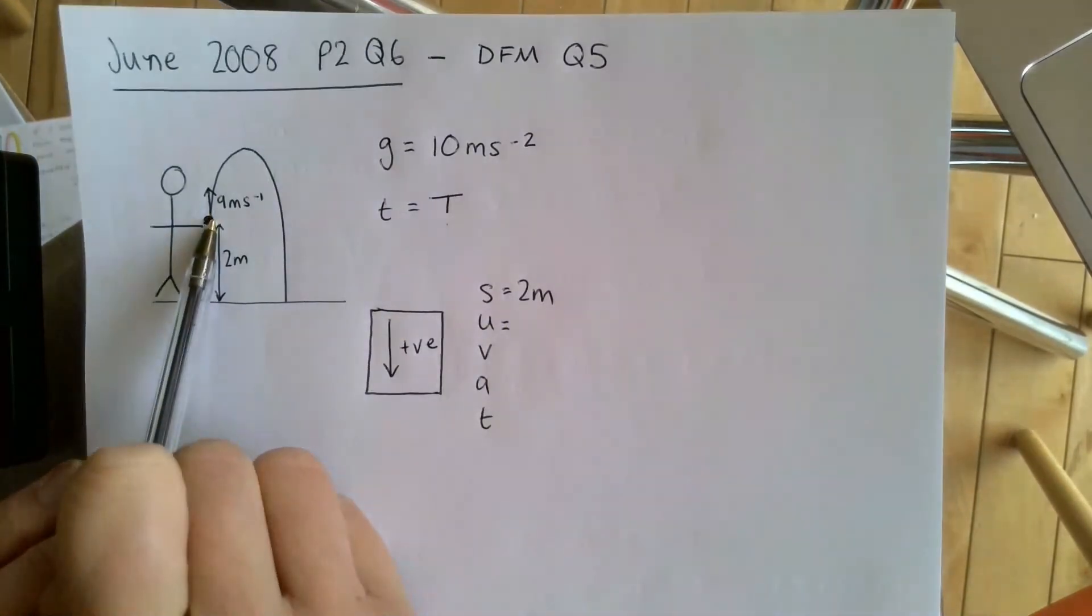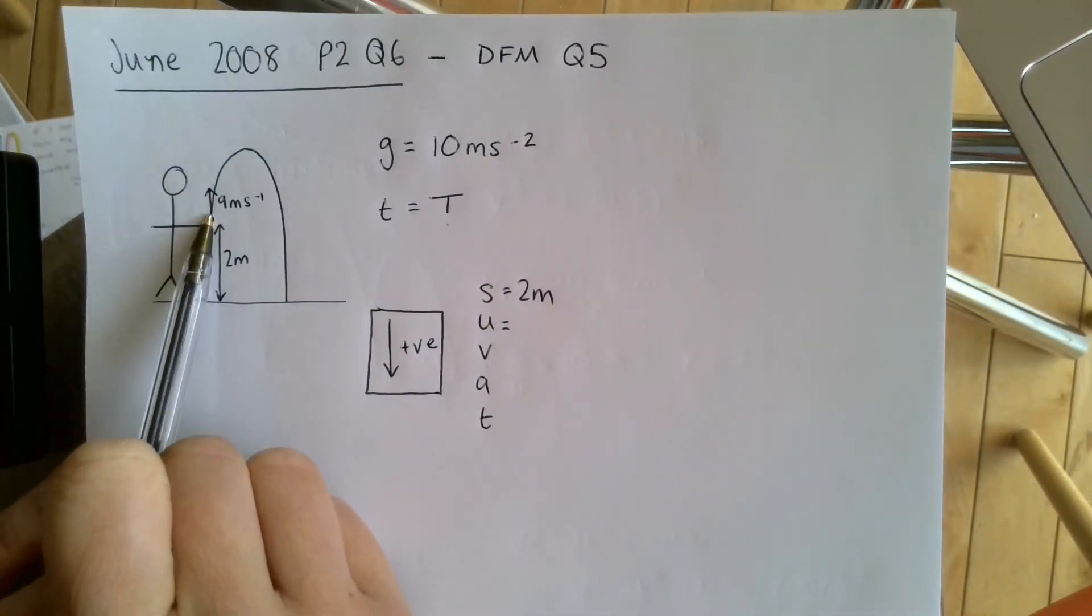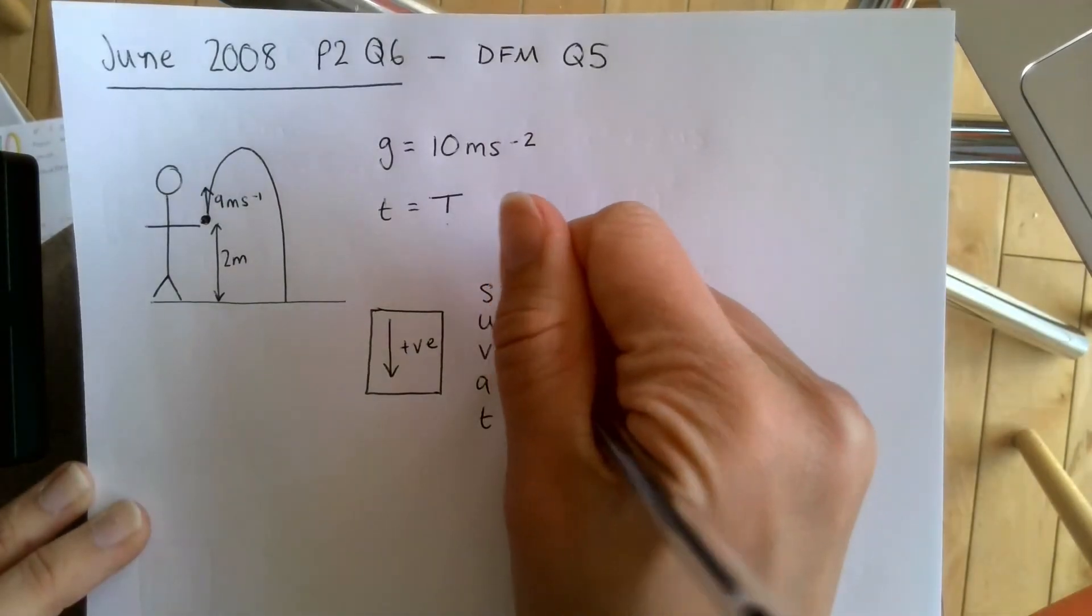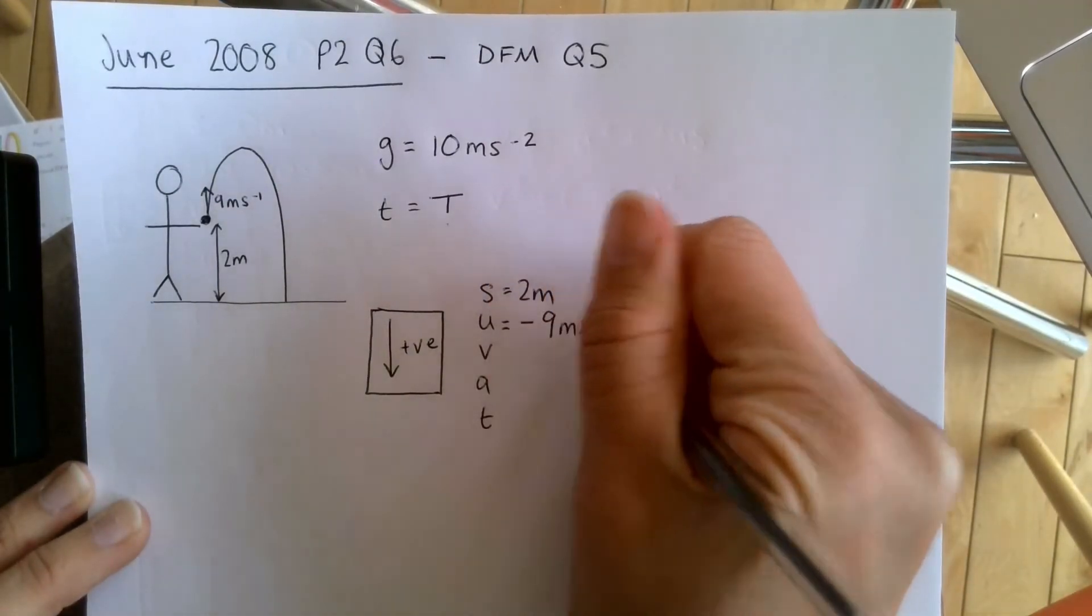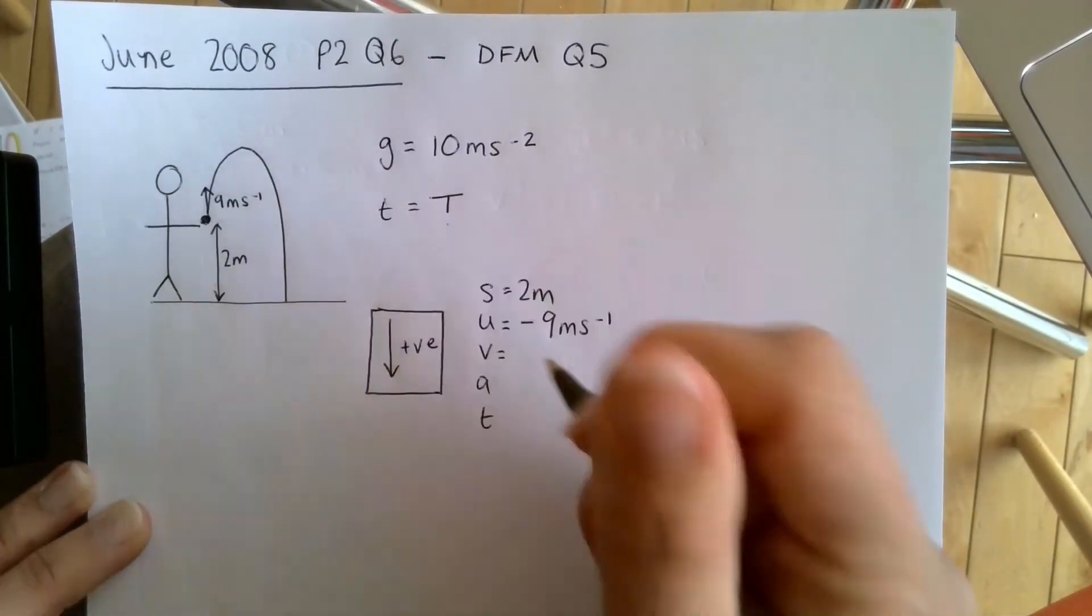U, well the initial velocity is nine meters per second but upwards. Therefore, because I'm taking downwards as positive, it's negative nine meters per second. V, I don't know.